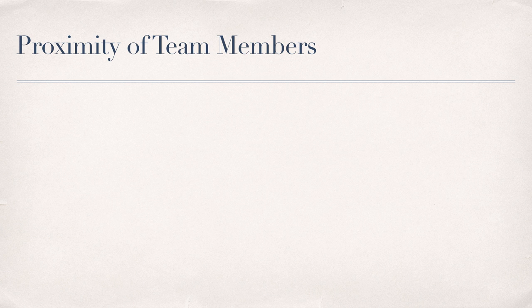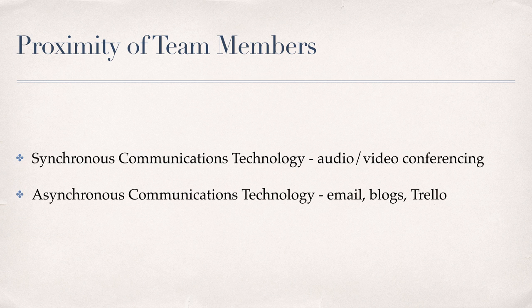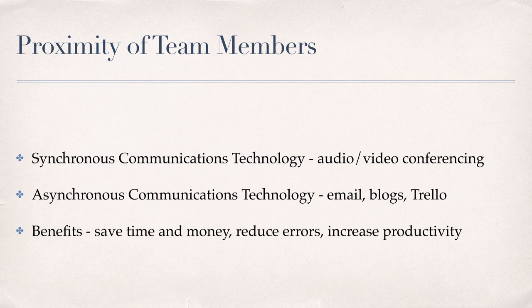What is the proximity of the team members to one another? What are the team norms and values related to synchronous and asynchronous technologies, including social media? Synchronous communications take place when all parties are present at the same time — examples are audio and video conferencing. Asynchronous communications take place when parties are not present at the same time — examples are email and blogs. You need to determine if a new technology can save time, reduce costs, or prevent mistakes, and if the increased complexity can be handled by the team to ensure benefits outweigh the cost.